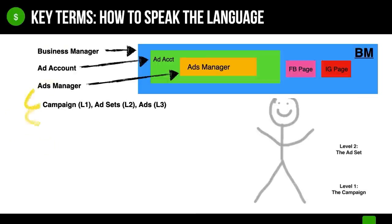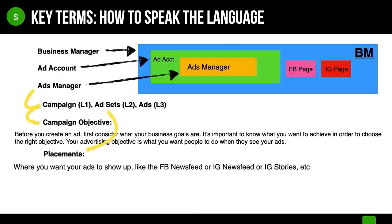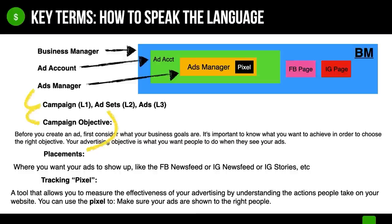Inside our campaigns we've got campaign objectives. Your campaign objective is what you need to consider before you create your ad — essentially your goal. It's very important that you know what you want to achieve before you start creating your ads. Your advertising objective is just what you want people to do when they see your ads. Within your ad sets you've got placements, which refer to where you want your ads to show up — like the Facebook news feed, Instagram news feed, Instagram stories, etc. And then there's the pixel, which is how you track who goes to your website and how those people see your ads.